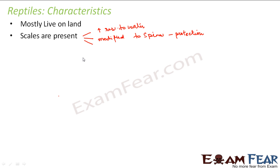The scales in reptiles are not permanent. In the case of fishes we saw that scales are permanent — they do not fall off on their own. But in the case of reptiles they are not permanent, so shedding of scales also happens. They are temporary.